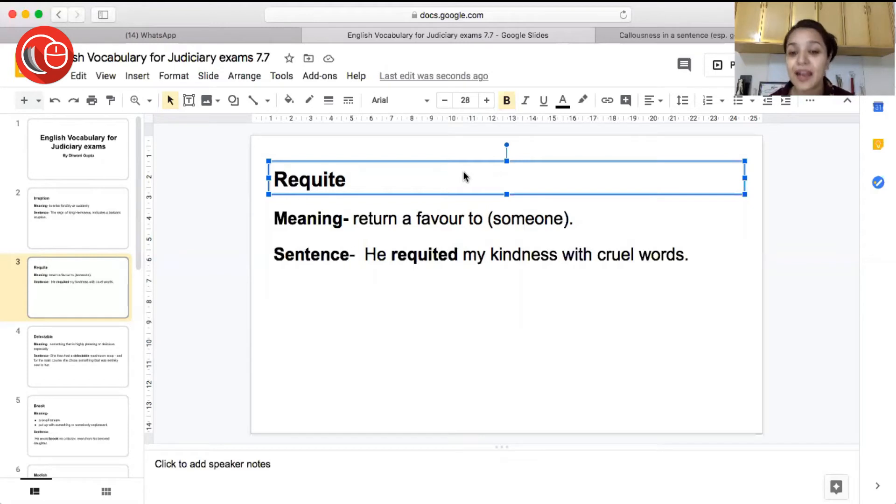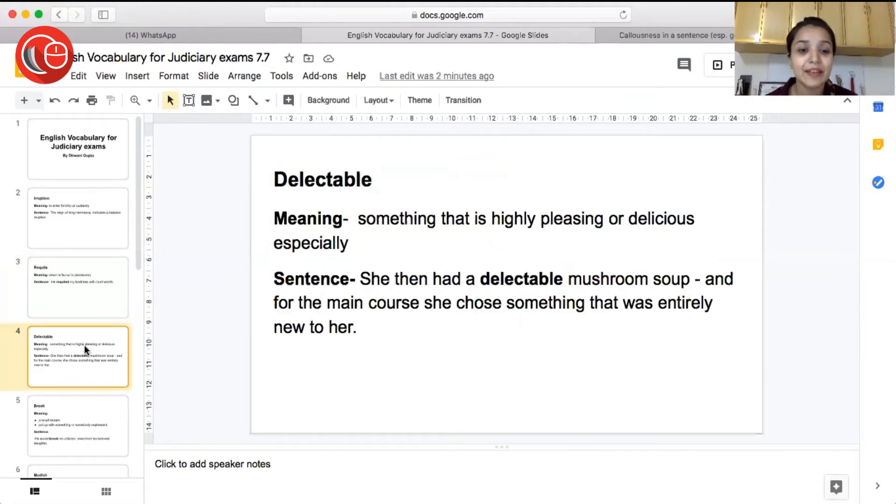So he returned my kindness with his cruel, harsh, insensitive words. The next word is delectable, meaning something that is highly pleasing or delicious. So something which is very delicious, very tasty and very extraordinary, that is called delectable. Sentence: She then had a delectable mushroom soup and for the main course she chose something that was entirely new to her. So first for the starters she had a very delicious and mouth-watering mushroom soup, and then for the main course she chose a completely different dish which was new to her.